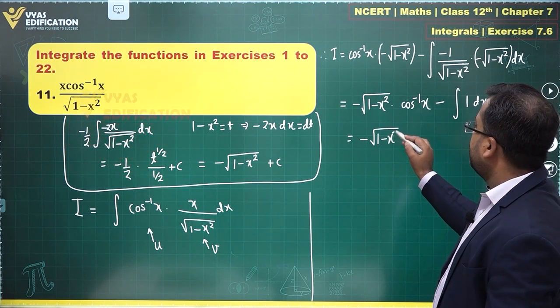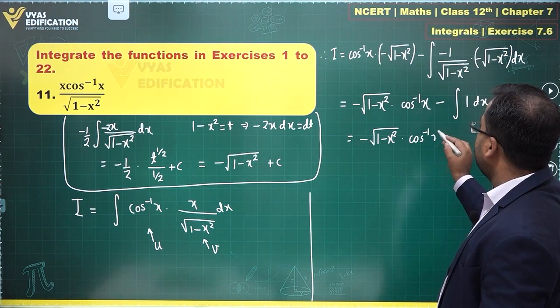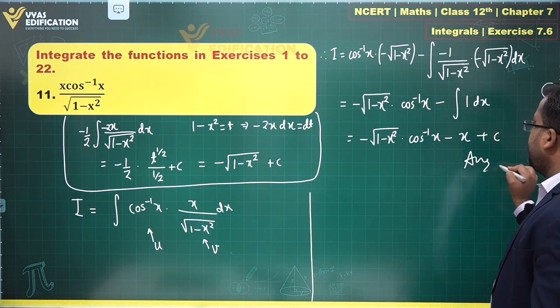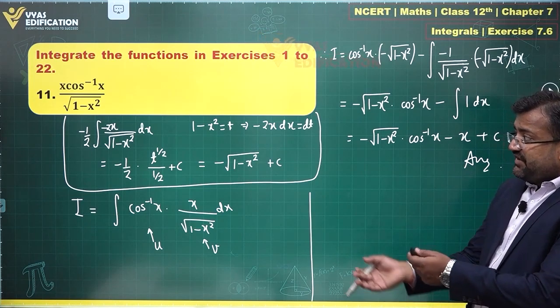So, minus root of 1 minus x square is okay, cos inverse x is also okay, minus x plus constant is what I'll be getting in this particular question and that's the final answer.